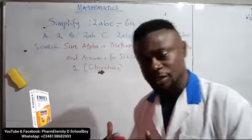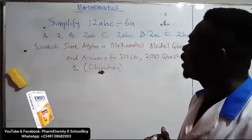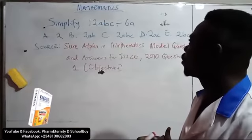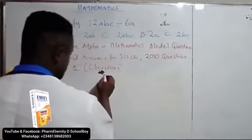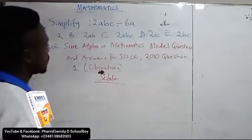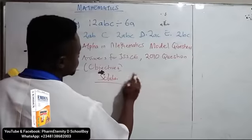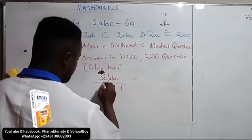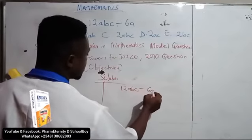Let's go back to the question. The question says, simplify 12abc divided by 6A. Solution. We have 12abc divided by 6A.